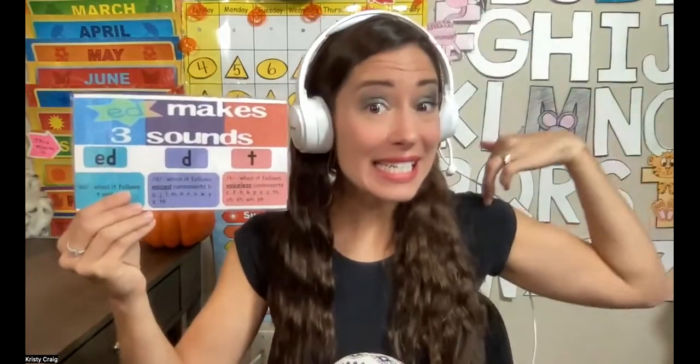E-D can say 'ed' like in 'head', or it can say 'd' — the dirty diaper D sound — or it can say 't', like a tall T. So there are three sounds that E-D can make at the end of a word.